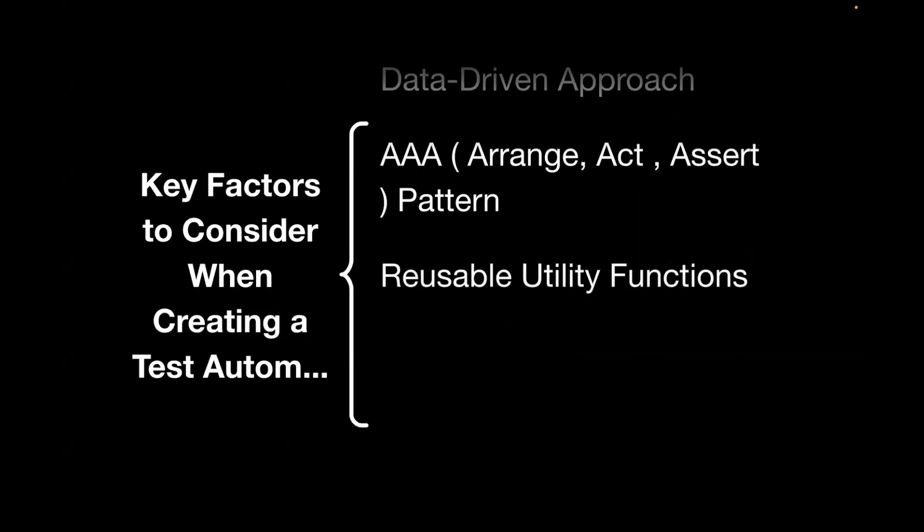Moving on to reusable utility functions — this means creating centralized functions for commonly used tasks. For example, you can create a utility to handle dropdowns or to handle API requests. Create common helper functions that are used frequently across your test automation to reduce code duplication. Make sure these functions are designed to be used across all different test suites, not just for one — that is the main purpose of reusable utility functions.